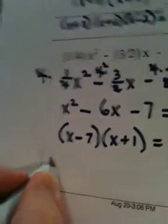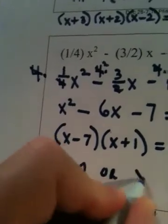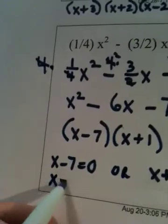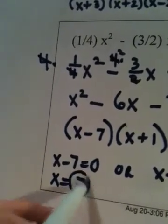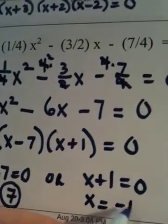So to finish, x minus 7 is 0, or x plus 1 is 0. In this first case, x is 7. And in the second case, x is equal to negative 1. And we're done.